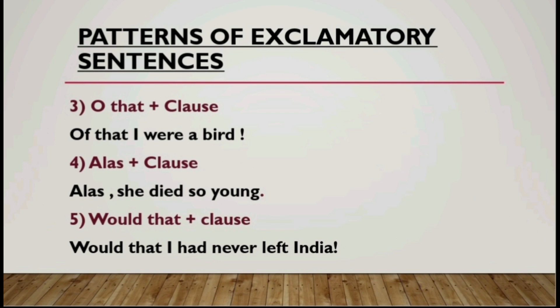The fourth pattern is: Alas + clause. This is used when you are sad or feeling grave about something. 'Alas' is an interjection used when you are sad. Example: 'Alas, she died so young' — you are unhappy that she was young and died. The fifth pattern is: Would that + clause. 'Would that' means you are imagining something to happen but it's not the reality. Example: 'Would that I had never left India' — the person is regretting having already left India. So 'would that + clause' is used when you wish something but something else has actually happened.